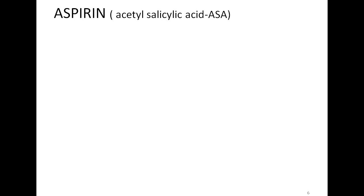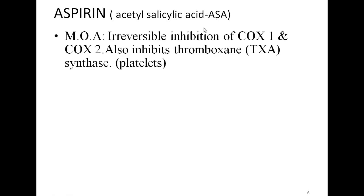Aspirin is the prototype non-steroidal anti-inflammatory drug, so we go into detail about aspirin. Chemically, aspirin is acetylsalicylic acid, short form ASA. The mechanism of action: aspirin inhibits cyclooxygenase 1 and cyclooxygenase 2 irreversibly. It also inhibits thromboxane synthase present in the platelets. This irreversible inhibition of both COX-1 and COX-2 is also termed suicide inhibition — meaning once the enzyme is inhibited, it cannot be reactivated. The same holds true for inhibition of thromboxane synthase in platelets.